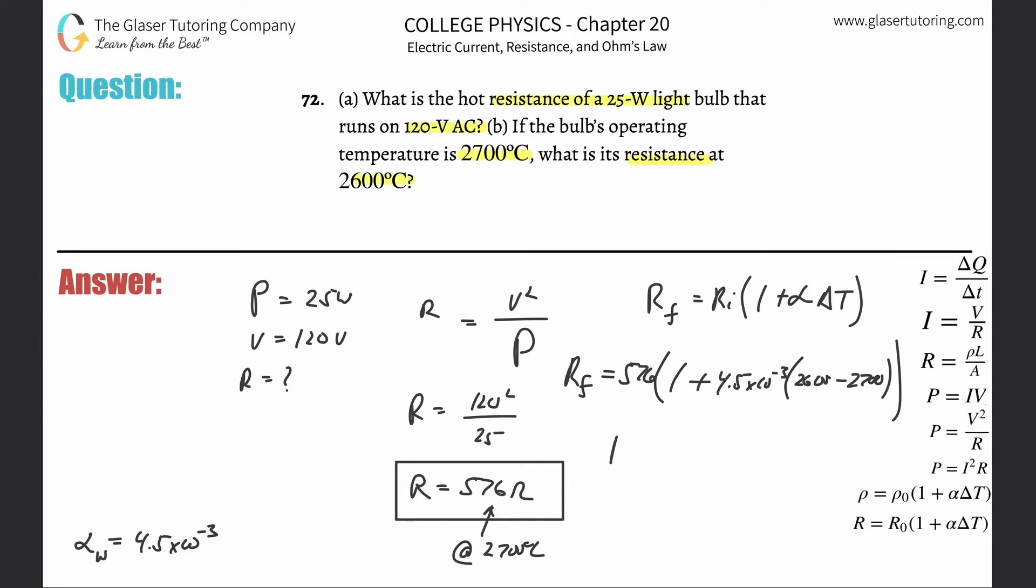And just take out that calculator and go to town. So 576 multiplied by parenthesis one plus 4.5 times 10 to the minus three, multiplied by essentially negative 100.